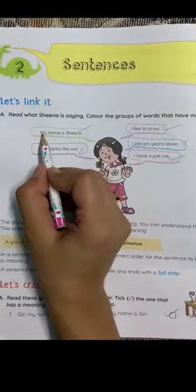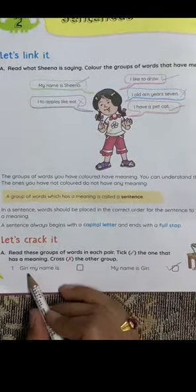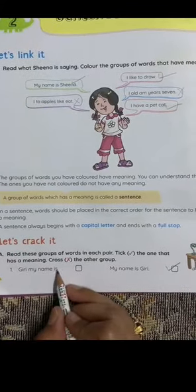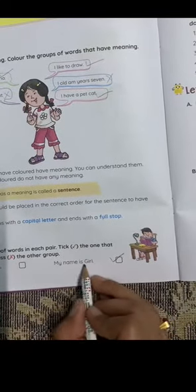See here, starting with the capital letter and with the full stop and has a meaning. See, Giri my name is - first letter capital, last full stop, but no meaning. My name is Giri, so this is a sentence.